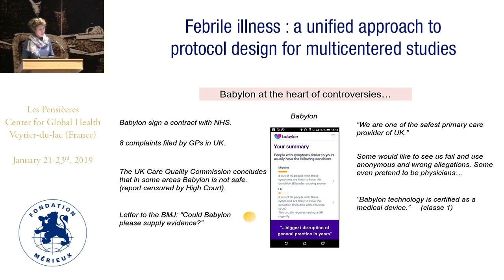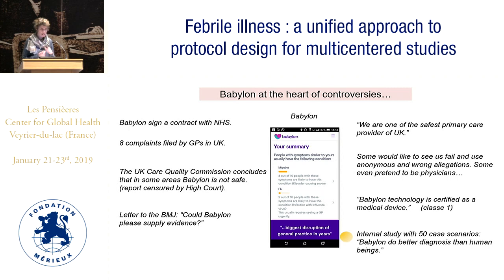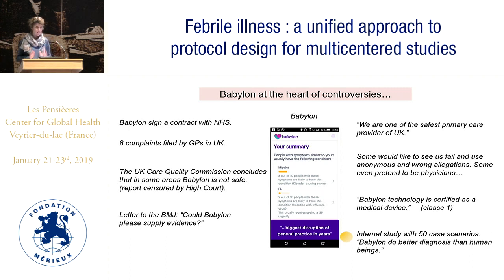Scientists came in after physicians. A letter to the BMJ asked: could Babylon please provide some evidence? This was really the big point — no evidence, no transparency, nothing known about the content of the algorithm. So Babylon said okay, we'll do a bit of research. They took 50 well-selected case scenarios to make their tool work well, compared it with some GPs, and claimed Babylon performs better diagnoses than human beings.